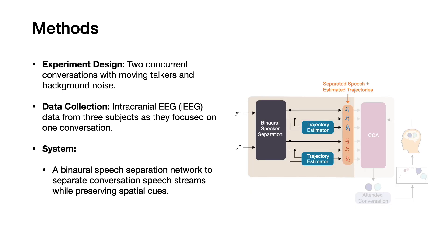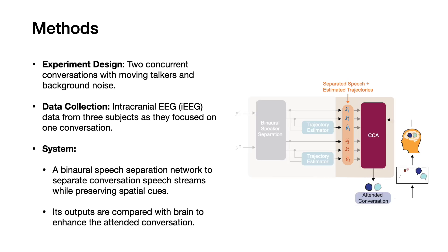A binaural speech separation network was trained to separate the speech streams of the two concurrent conversations while preserving their spatial cues and suppressing background noise. The outputs of the speech separation network were then compared with the brain to identify and enhance the attended conversation.